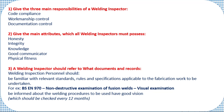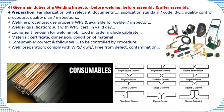Be informed about the welding procedure to be used. Have good vision — without good vision you cannot perform welding inspection. Vision should be checked every 12 months and you should have the report available. In an audit, someone may ask if you have a valid vision certificate. The certificate should confirm testing within every 12 months; otherwise there may be a problem. Definitely you should have a vision test certificate issued every 12 months.